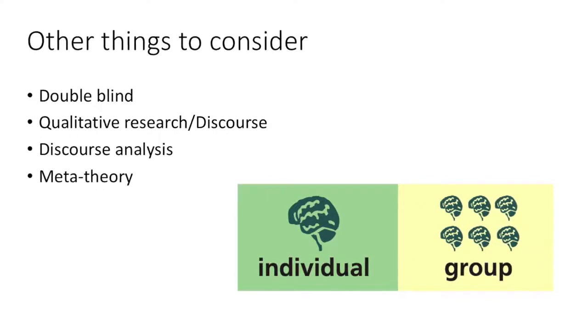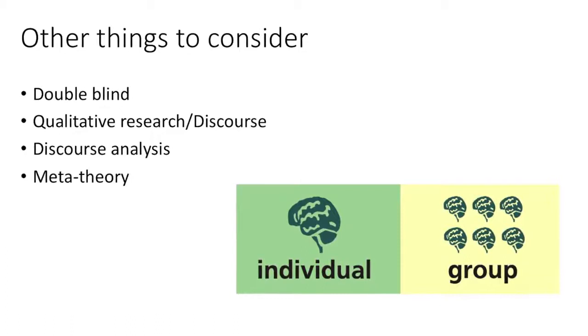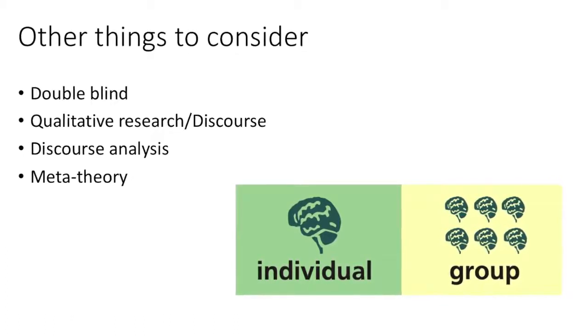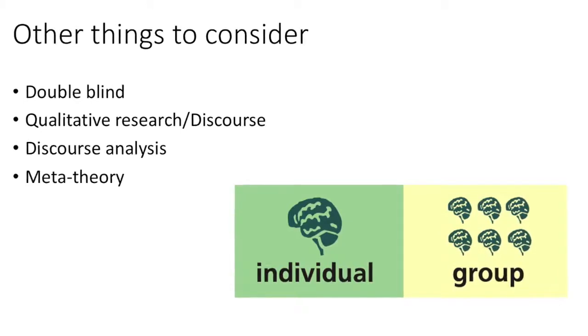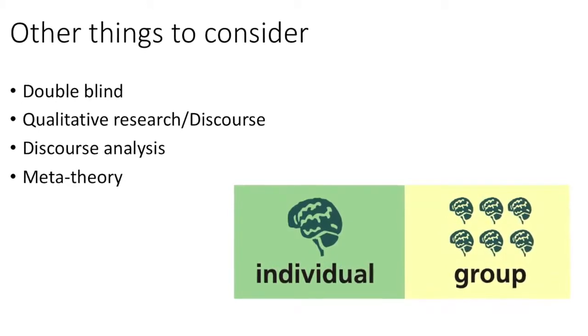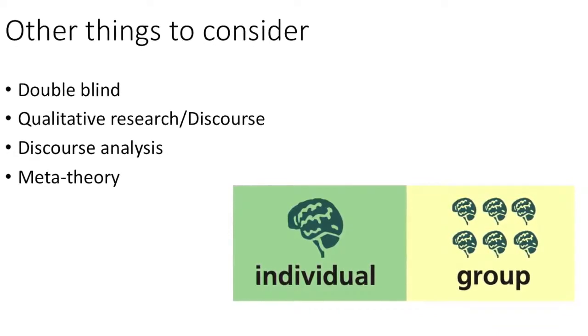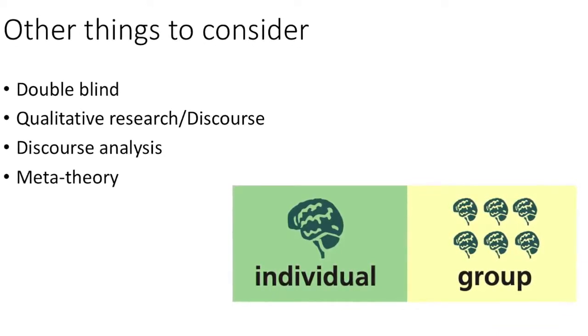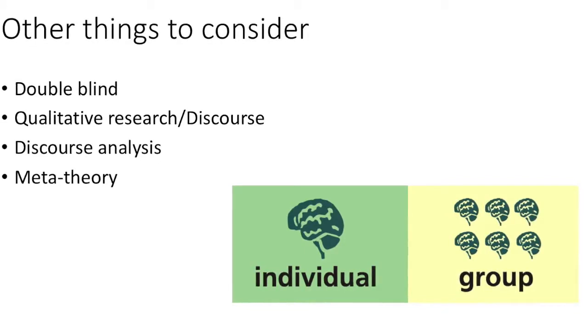Qualitative research or discourse relies on a communicative event in the situational socio-historical context. There is also discourse analysis, which is a set of methods used to analyze text to understand meaning and significance behind a certain concept or value. And then finally there is meta-theory, which is the interrelated concepts and principles that concern the theory.